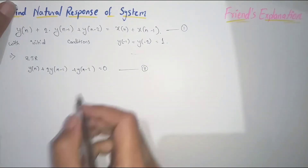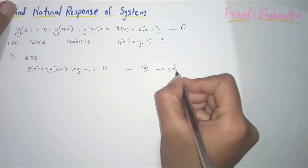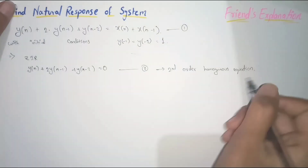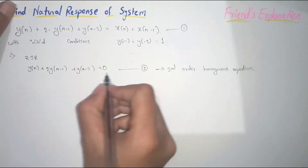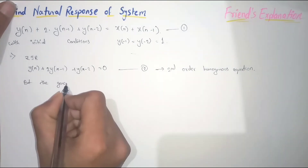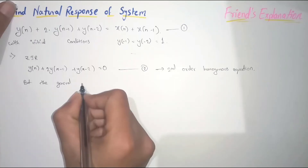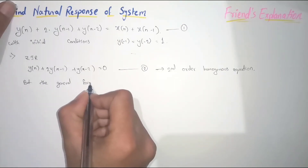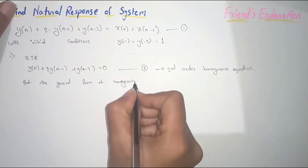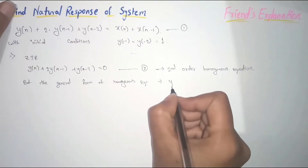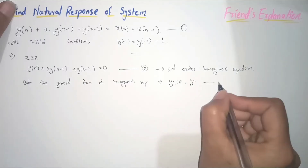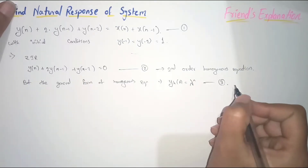This is a second-order homogeneous equation. The general form of the homogeneous equation is: y_h(n) equals lambda to the power of n. Let's consider this as equation 3.